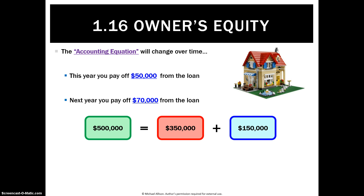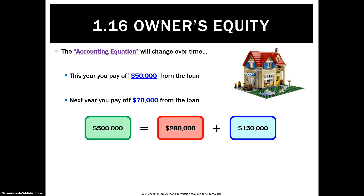Let's pretend another year goes by and you pay off another $70,000 from the loan. The value of the property doesn't change. However, you now owe the bank $280,000. Subsequently, your owner's equity or capital goes up to $220,000. You can see the relationship: liabilities go down as debts are paid off, and that therefore increases your owner's equity.